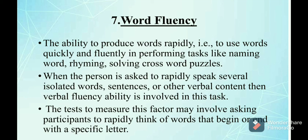The seventh and last primary mental ability is word fluency — the ability to produce words rapidly, using words quickly and fluently in tasks like naming words, rhyming, and solving crossword puzzles. When a person is asked to rapidly speak isolated words, sentences, or other verbal content, word fluency ability is involved. This factor is responsible for the communication skills of a person, and tests may involve asking participants to rapidly think of words beginning or ending with a specific letter.